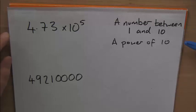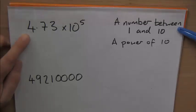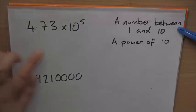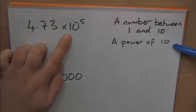The two conditions for a number being in standard form is there's a number between 1 and 10, we've got 4.73 here, and there's a power of 10, so 10 to the power of 5 here.